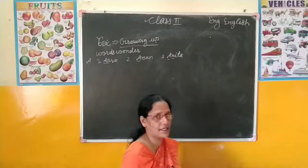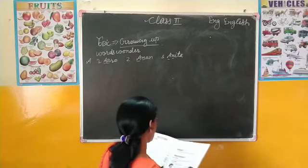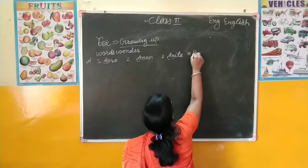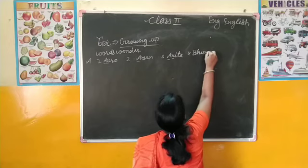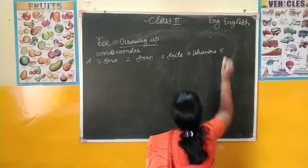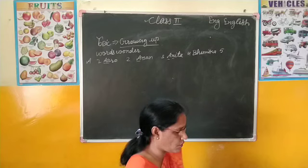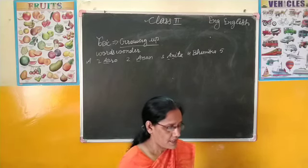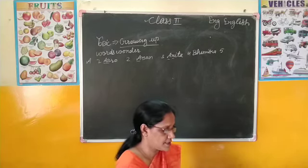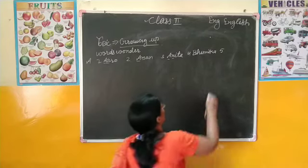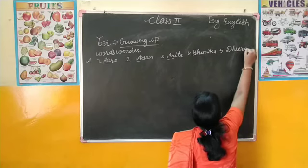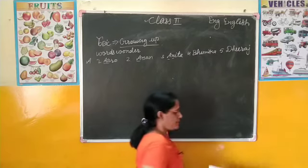फिर B से start करेंगे कि B से कोई name है इसमें। B से Number 4 पे है Bhumika - B-H-U-M-I-K-A। फिर C का नहीं है, D से - D से Dheeraj है हमारे सामने, यहां Dheeraj आ जाएगा - D-H-E-E-R-A-J।